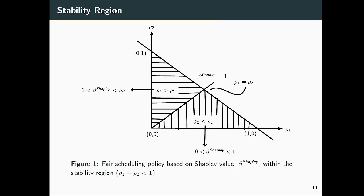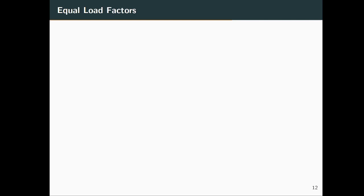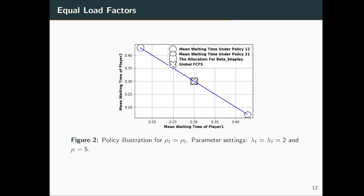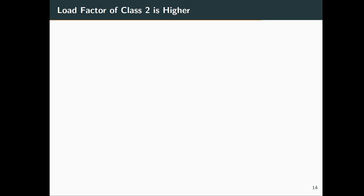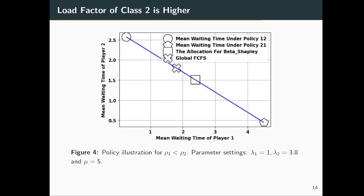From the stability triangle, when rho_2 < rho_1, beta_Shapley lies between 0 and 1 (bottom triangle); when rho_2 > rho_1, beta_Shapley lies between 1 and infinity (upper triangle); and when rho_1 = rho_2, beta_Shapley = 1. For equal load factors, beta_Shapley overlaps with global FCFS. If rho_1 is higher, the policy moves towards scheduling policy (2,1); if rho_2 is higher, it moves towards scheduling policy (1,2) where player 1 has higher priority.